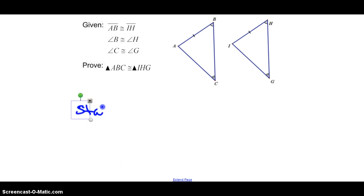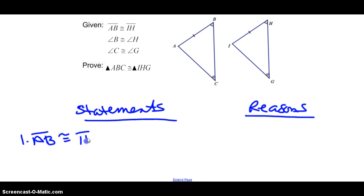So let's see what we got. Statement and reasons. Alright, so we know that segment AB is congruent to segment IH, angle B is congruent to angle H, and angle C is congruent to angle G. This is given.